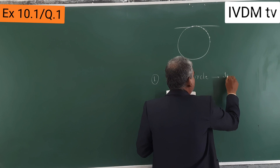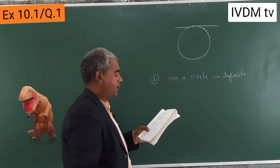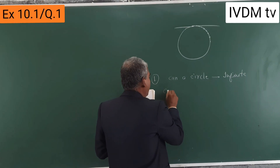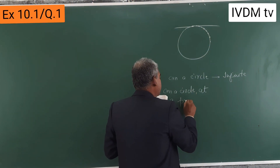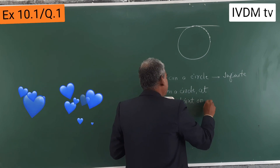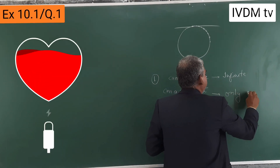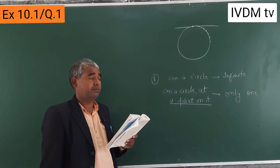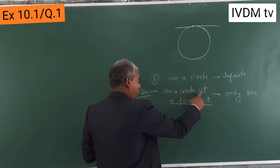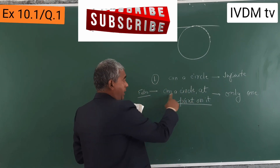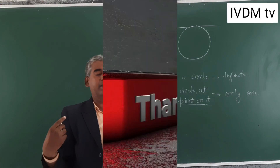The answer is infinite because a circle has infinite number of points. But if the question is how many tangents can a circle have at a point on it, then the answer is only one. So the full answer: how many tangents can a circle have? Infinite. How many tangents at a point on it? Only one.